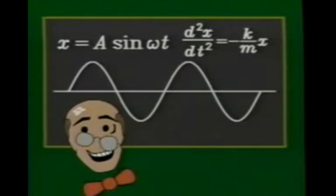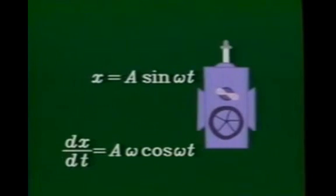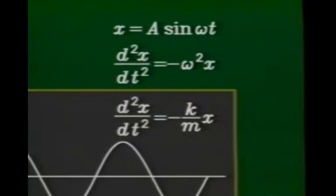But if that's x, is its second derivative equal to minus k over m times x? The answer is yes, if omega is chosen correctly.